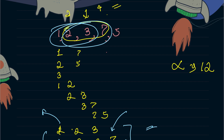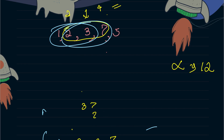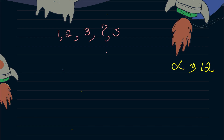Yes, you can absolutely optimize this. Here comes the concept of prefix sum. The prefix sum till the first index is 1, then 3, then 6, then 13, and then 18. If you are not acquainted with prefix sum, consider learning that and then coming back.